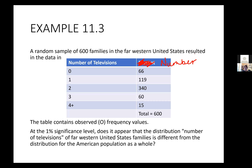At a 1% significance level, does it appear that the distribution of the number of televisions of far western United States families is different from the distribution of the American population as a whole? So the observed values are from the far western United States. We're going to use the chi-squared test to determine if this is significantly different than what we would expect to see.